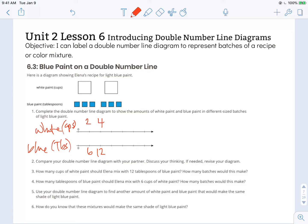You can see on this top row I'm counting by twos. So three batches would have six cups of white paint, four batches would have eight, etc. And then on the bottom you can see I'm counting by sixes. So one batch would have six tablespoons, two batches would have twelve tablespoons. That means three batches would have eighteen tablespoons and continuing with that pattern.